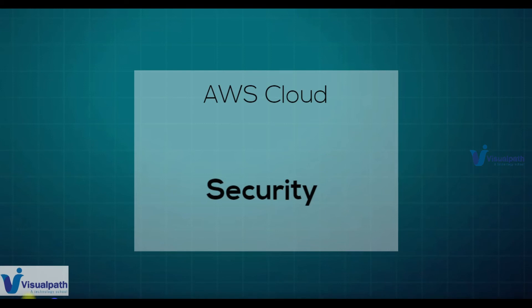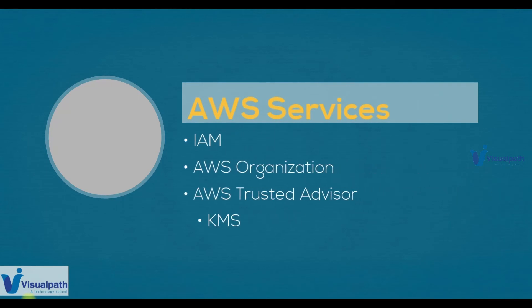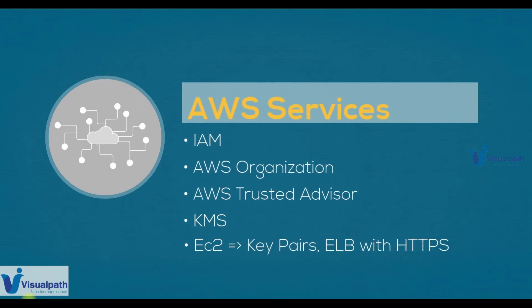Let's see what AWS services we are going to use, starting with IAM, AWS Organizations, AWS Trusted Advisor, KMS, EC2 key pairs, and Elastic Load Balancer with HTTPS secure connection. IAM you already know, but we'll talk about more good practices. AWS Organizations is about grouping multiple accounts and implementing security across them. Trusted Advisor is a fully managed AWS service that gives you security and other information about your AWS account. KMS is for encryption — we create keys and store them in KMS to encrypt our data.